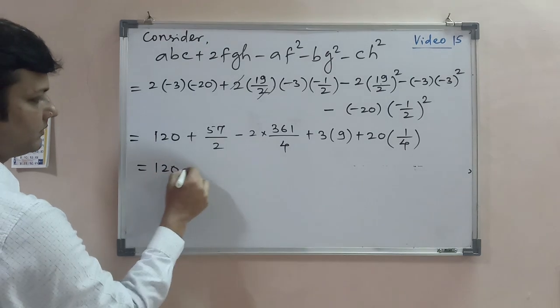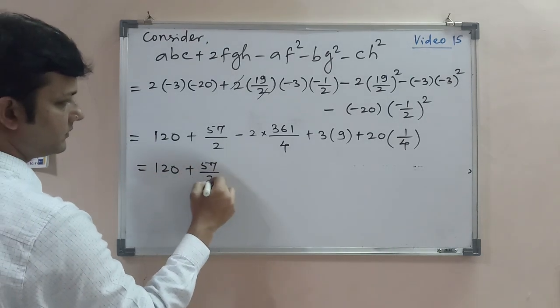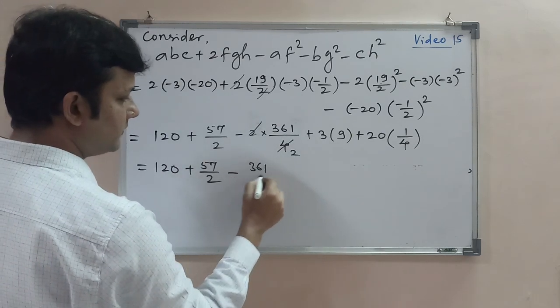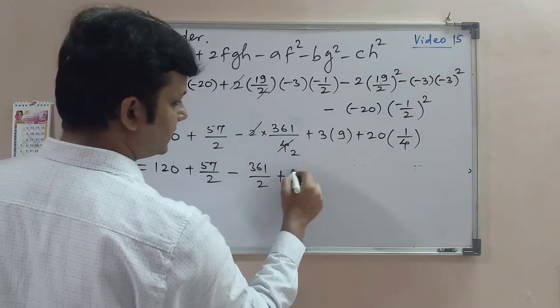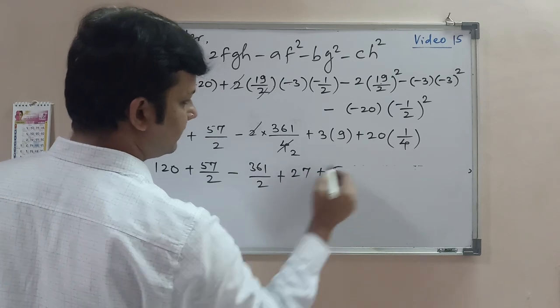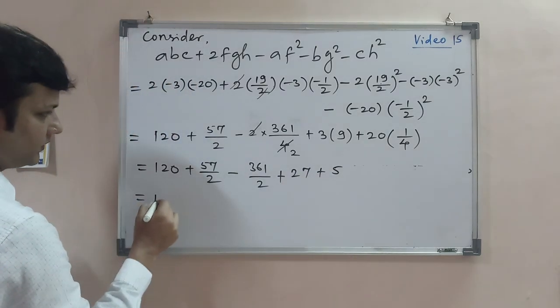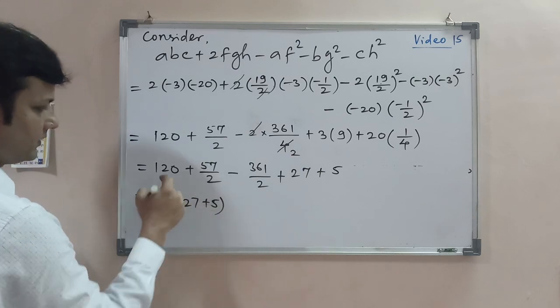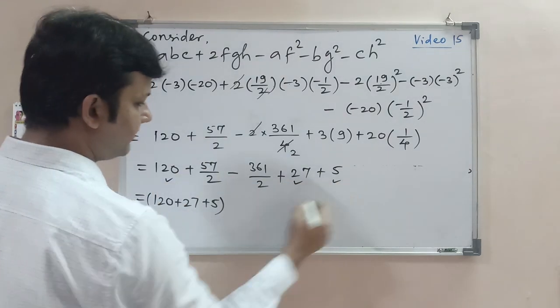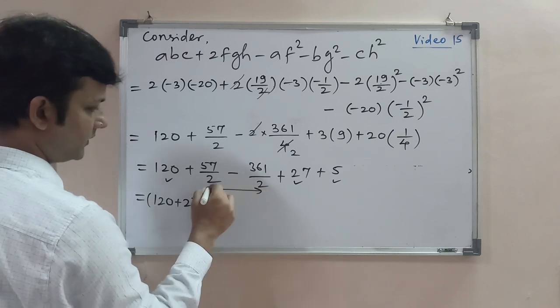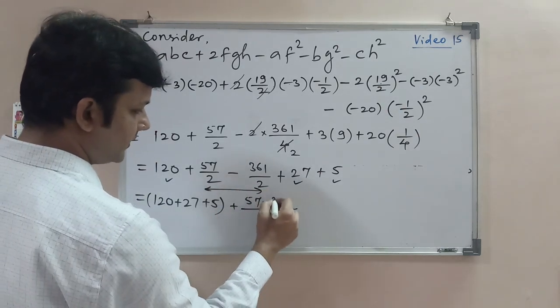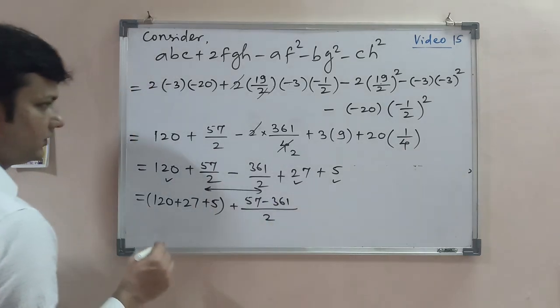So 120 plus 57/2 minus 361/2 plus 27 plus 5. So 120 plus 27 plus 5 equals 152, and 57 minus 361 over 2.